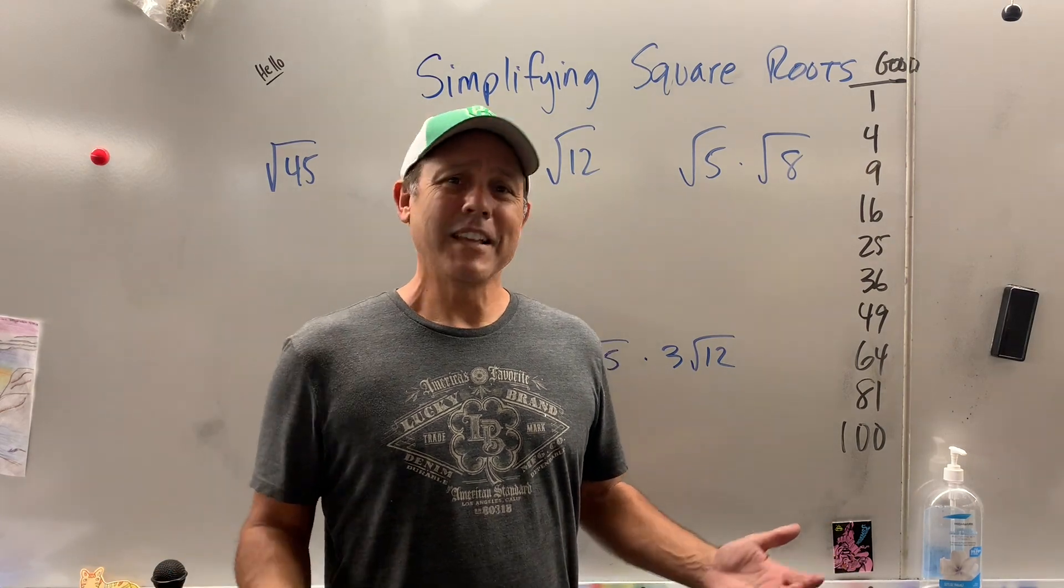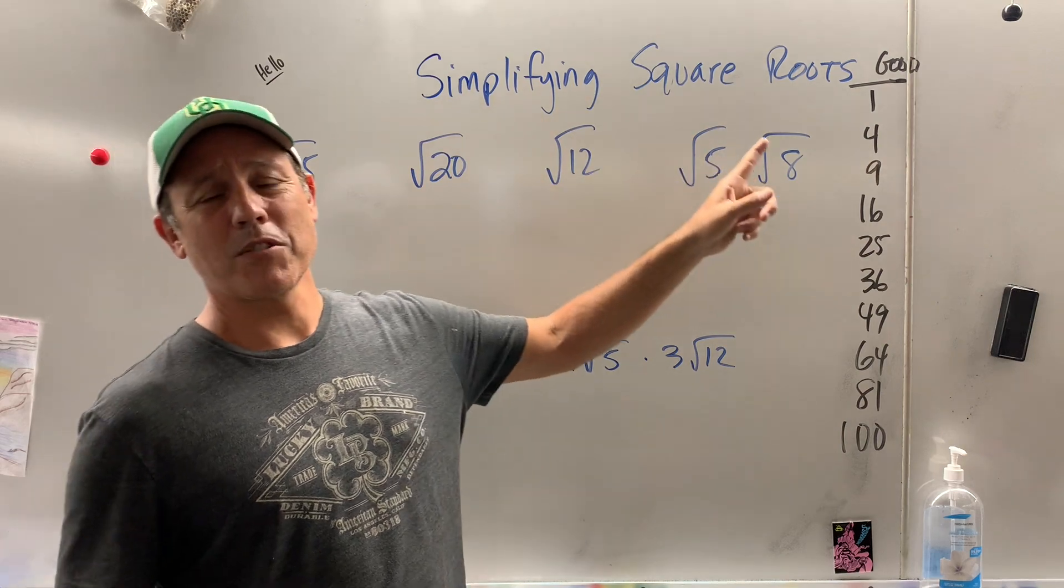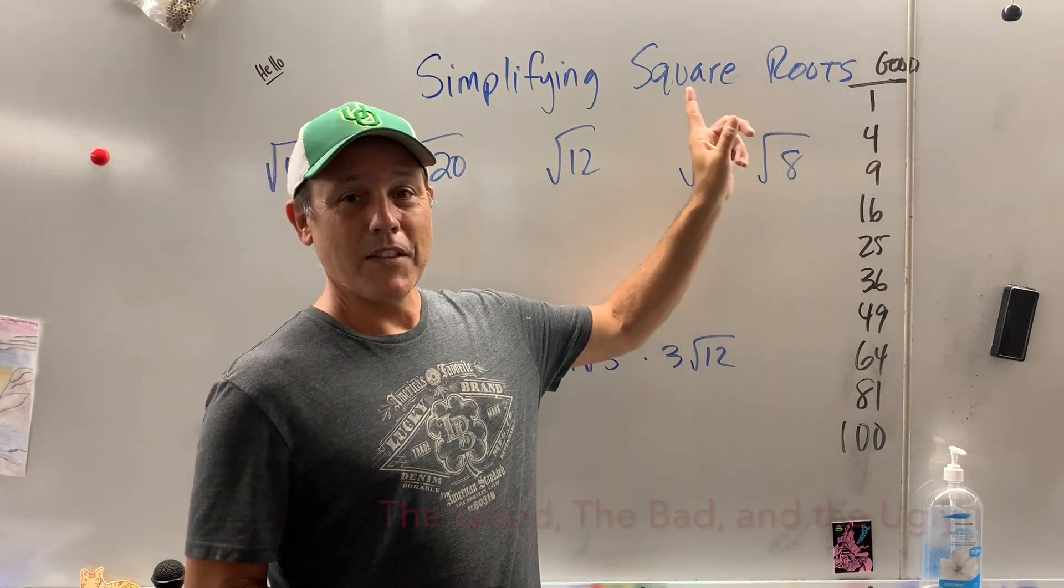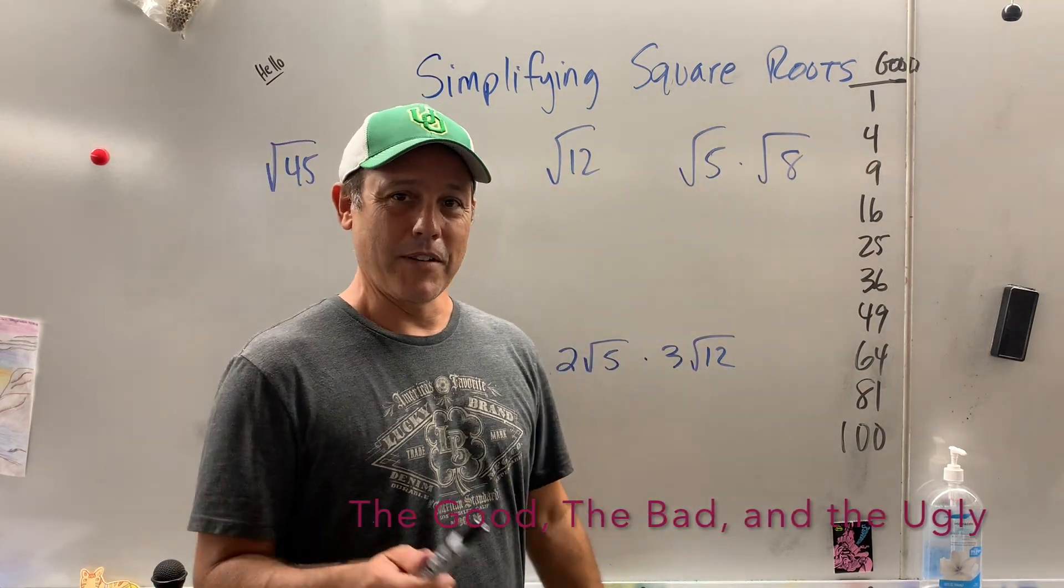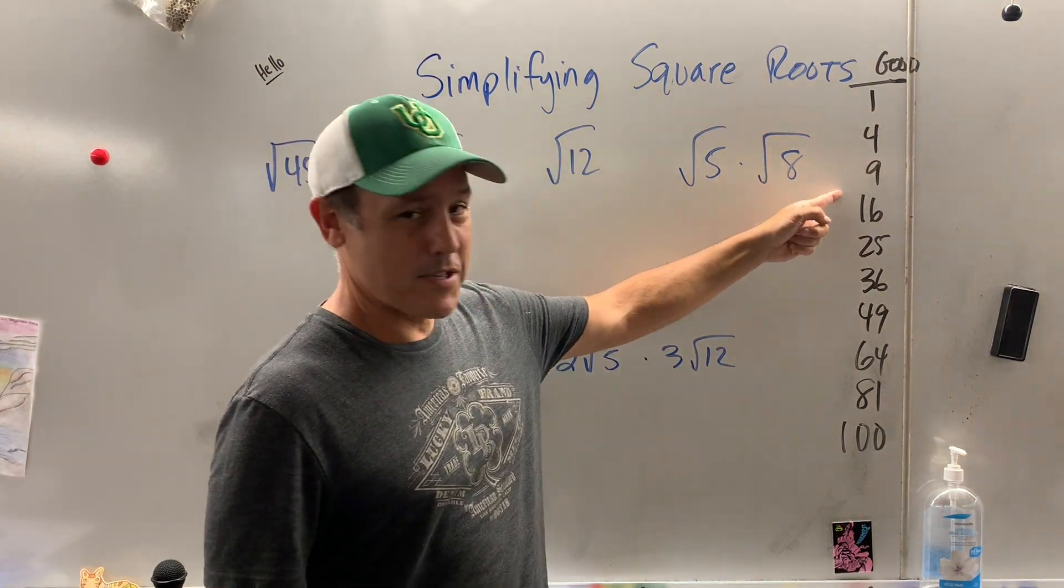Where's Clint Eastwood when you need him? Okay kids, I'm gonna teach you how to simplify square roots using the good, the bad, the ugly method. Here's how we do it. First of all, the good list.